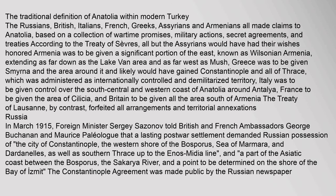Anatolia: The Russians, British, Italians, French, Greeks, Assyrians, and Armenians all made claims to Anatolia, based on a collection of wartime promises, military actions, secret agreements, and treaties. According to the Treaty of Sevres, all but the Assyrians would have had their wishes honoured. Armenia was to be given a significant portion of the east known as Wilsonian Armenia, extending as far down as the Lake Van area and as far west as Mush. Greece was to be given Smyrna and the area around it, and likely would have gained Constantinople and all of Thrace. Italy was to be given control over the south-central and western coast of Anatolia around Antalya, France to be given the area of Cilicia, and Britain to be given all the area south of Armenia. The Treaty of Lausanne, by contrast, forfeited all these arrangements and territorial annexations.